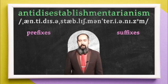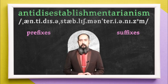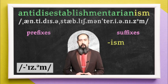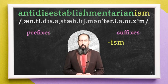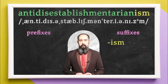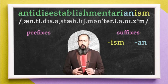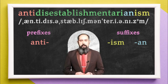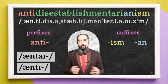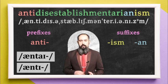Let's start with the suffixes. The last one, -ism, this is the belief in something — many other words like that. Before that, we have -an, an adjective maker. And what about the prefix? The first one, anti- or anti-, which means against.